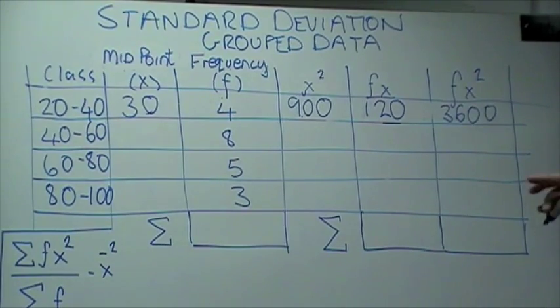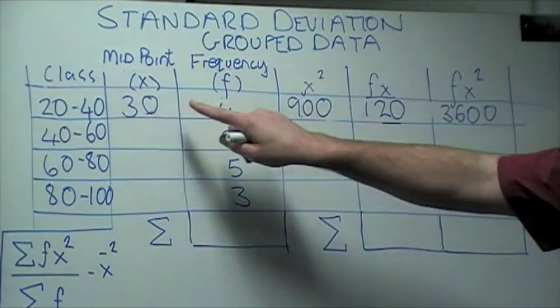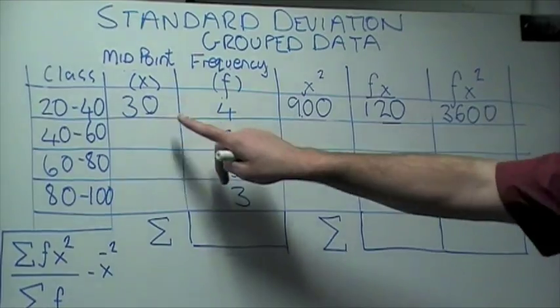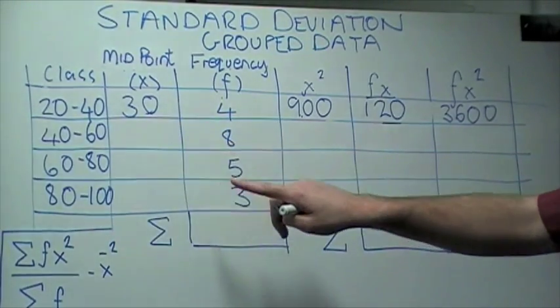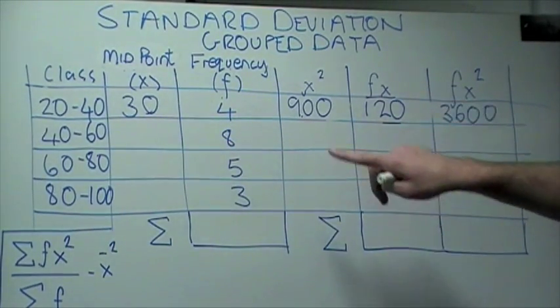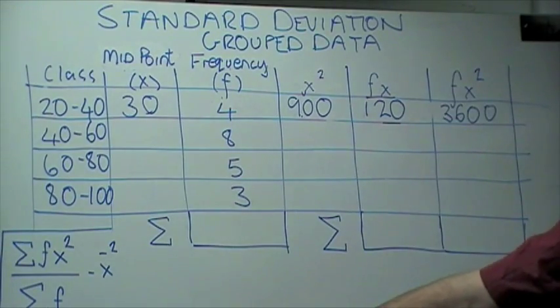What we need to do now is to do exactly the same for the rest of the data. And then we'll see how we calculate the mean.